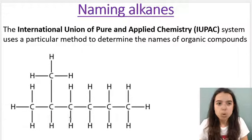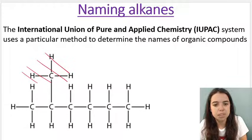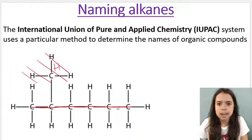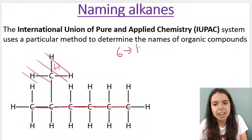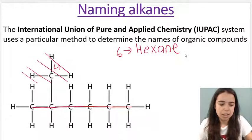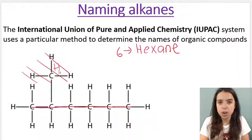How would you name this alkane if the branch did not exist? Let's pretend I took that away and focused just on the main chain. How many carbons are in this main chain? One, two, three, four, five, six. So you would say there are six carbons, so this is hexane — hex because six carbons, and ane because it's an alkane. But now what happens if I add in that branch? We need to learn how to name alkanes when there are branches.